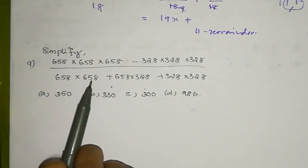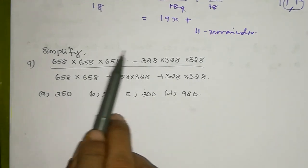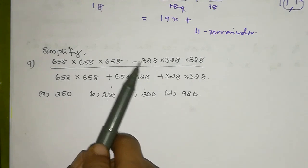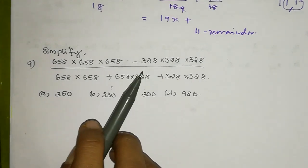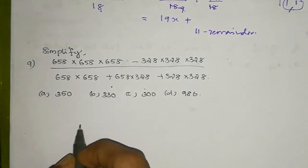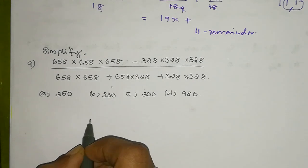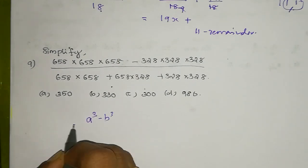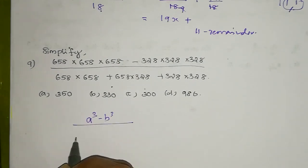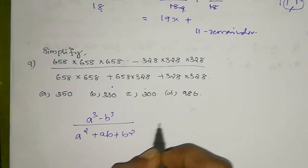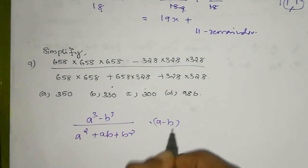We can compare this with an equation: a³ minus b³ divided by a² plus ab plus b² equals a minus b.